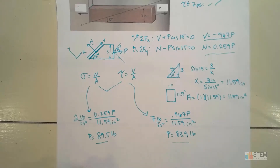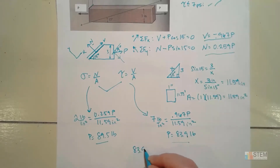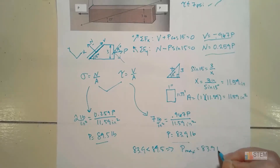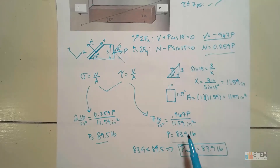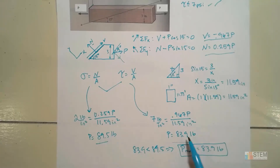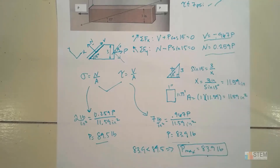So these are our two choices — which one is the maximum value we could have? It's going to be the smaller one: P max is 83.9 pounds. The reason is that once I exceed 83.9 pounds, I will have already exceeded my max shear stress. There's no way to get to 89.5 because the shear stress specification would already be violated. So 83.9 pounds ensures that both conditions are met. That is the end of that one — hopefully y'all found that helpful.